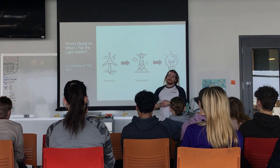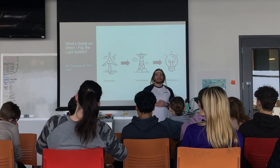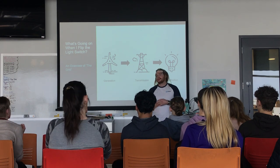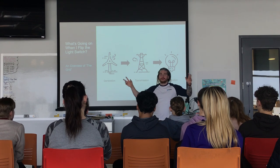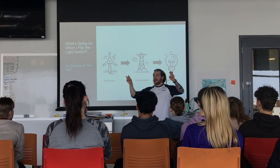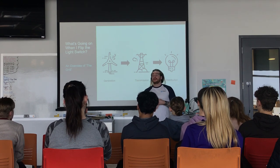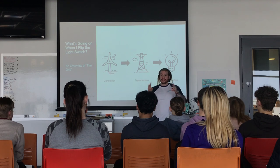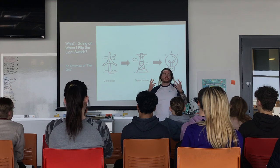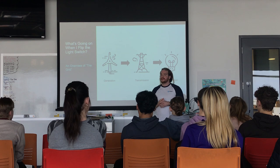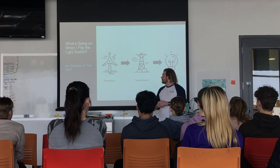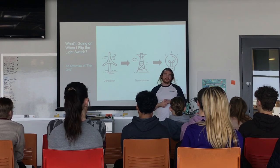So let's get into it. What's going on when you flip the light switch? The energy gets produced, it gets to your house—how do we get there? The grid: when we say 'the energy grid,' or you hear about the ice storms in Texas that took out the grid—what do we mean? The grid is all of the infrastructure that goes into the generation, transmission, and distribution of energy.